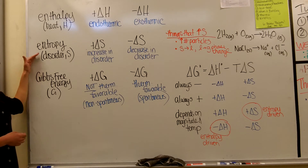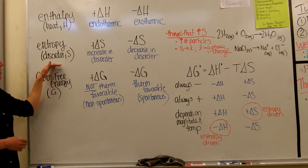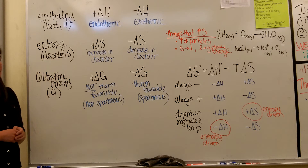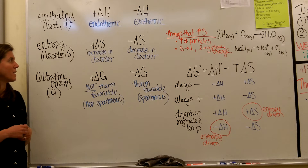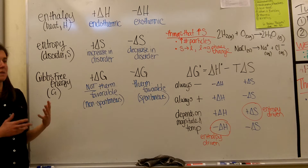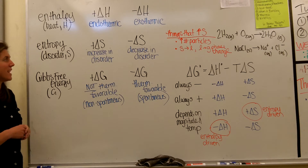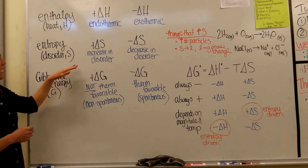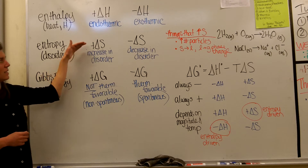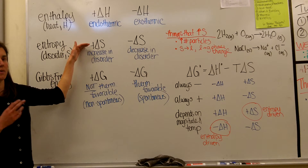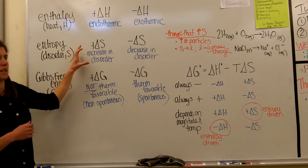The next thing we consider is entropy. We use the symbol S for entropy. It has to do with disorder. The natural state of the universe is that it will increase in disorder — your room over time is going to get messier spontaneously unless someone comes along and cleans it up. When you have an increase in disorder, your change in S is positive, meaning after the reaction you have more disorder than when you started, and this is something that is energetically favorable.